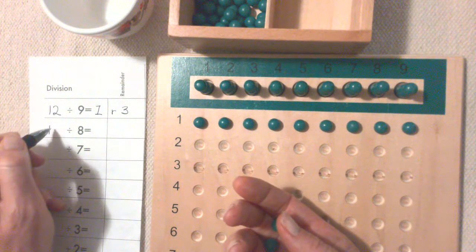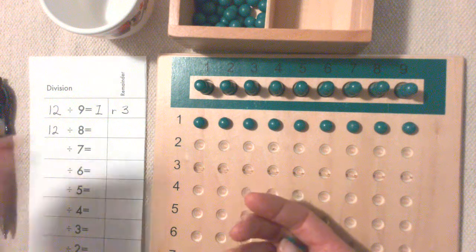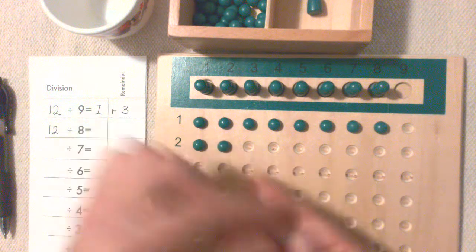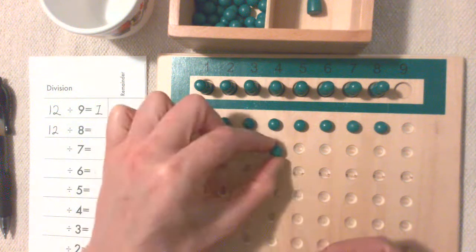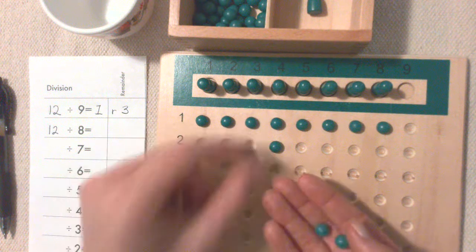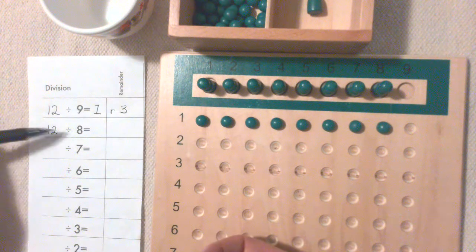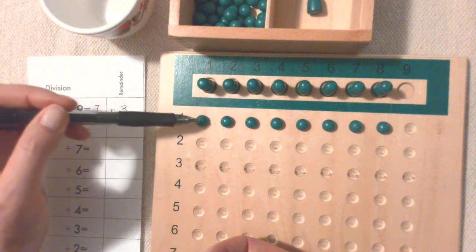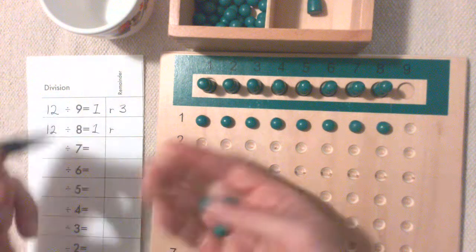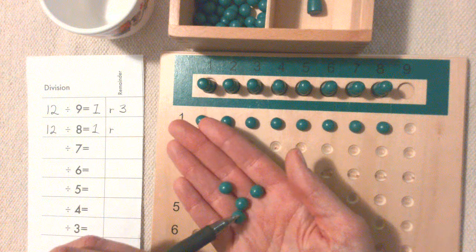Next is 12 divided by 8. So we take away a Skittle and redistribute our beads. There's not enough, so 12 divided by 8 equals one remainder four.